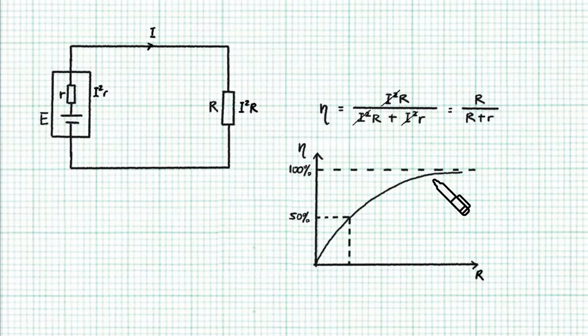We can plot the graph for this formula. In fact, when the load resistance matches the internal resistance, the efficiency is only 50%. This formula also tells us that the larger the load resistance, the better the efficiency.